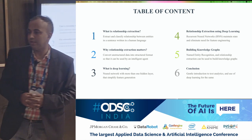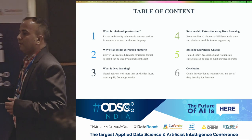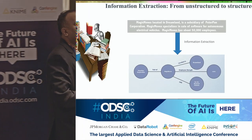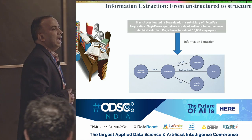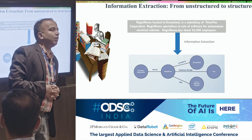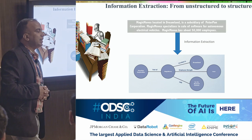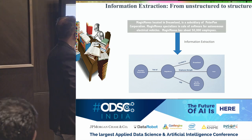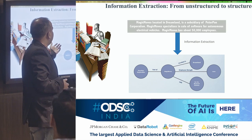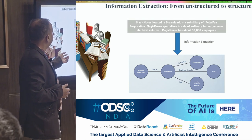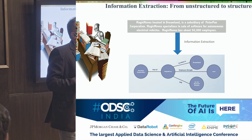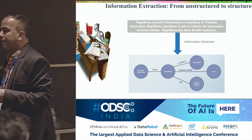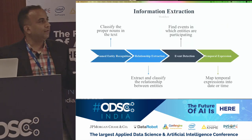In very simple words, information extraction is the application of human knowledge and machine learning to convert human text into a form that can be easily consumed by software agents. Basically it's like converting from unstructured text to a structured pattern, and I think most of you would have seen this a lot in today's talk and in your day-to-day lives.